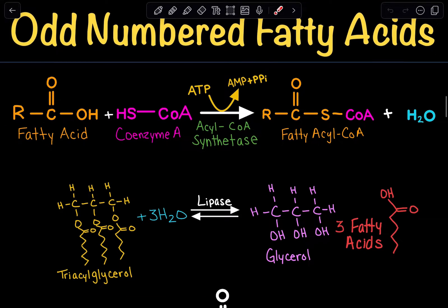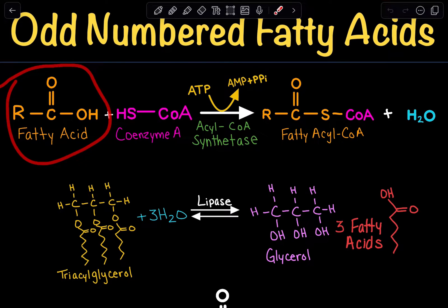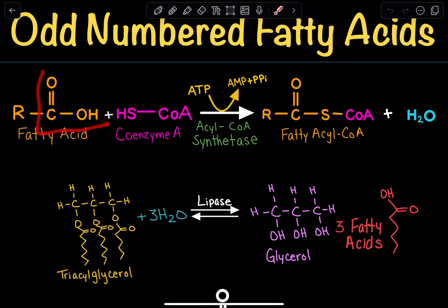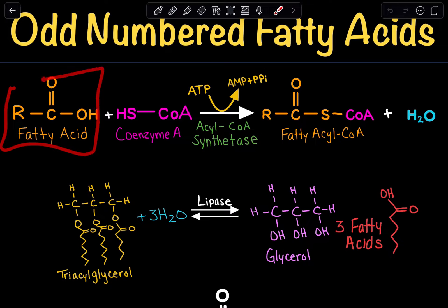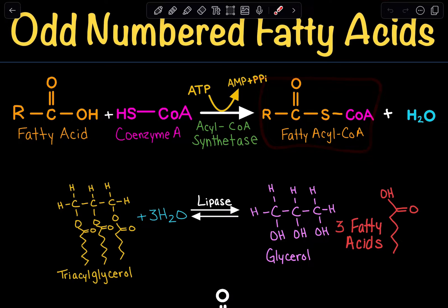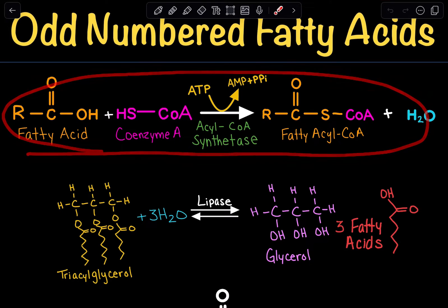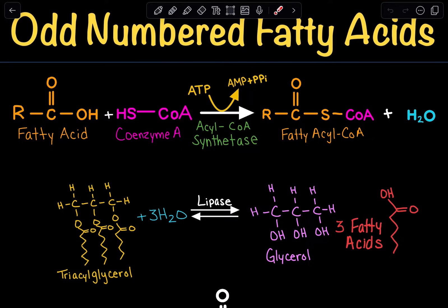We start off with our fatty acid. This is just a general depiction — we have our carboxylic group and an R notation, which simply tells us we have an arbitrary number of carbons; it could be 5, 10, 12, however many it may be. When our fatty acid combines with coenzyme A, we get fatty acyl-CoA, and this is the activation step of our fatty acid before it can undergo beta-oxidation.